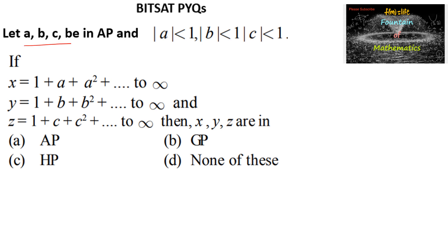Given that a, b, c are in arithmetic progression, and mod a is less than 1, mod b is less than 1, and mod c is less than 1. We have x equals 1 plus a plus a squared and so on up to infinity, similarly y in terms of b and z in terms of c. We know that these are geometric infinite GP sums.